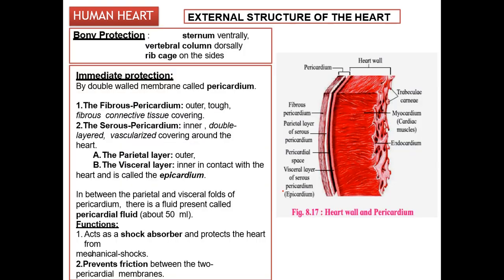The heart is covered by a covering called the pericardium. The pericardium is a double-walled membrane. It is divided into two layers: number one, the fibrous pericardium, which is the outer tough fibrous connective tissue covering.